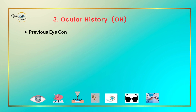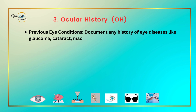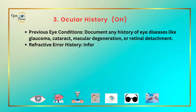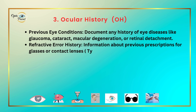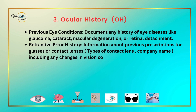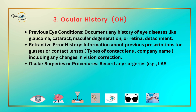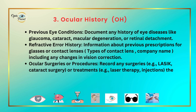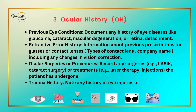Ocular history — previous eye conditions. Document any history of eye diseases like glaucoma, cataract, macular degeneration, or retinal detachment. Also record refractive error history, including previous prescriptions for glasses or contact lenses, types of contact lens and company name, and any changes in vision corrections. Record ocular surgeries or procedures such as cataract surgery or treatments like laser therapy and injections the patient has undergone. Also note any history of eye injuries or trauma.